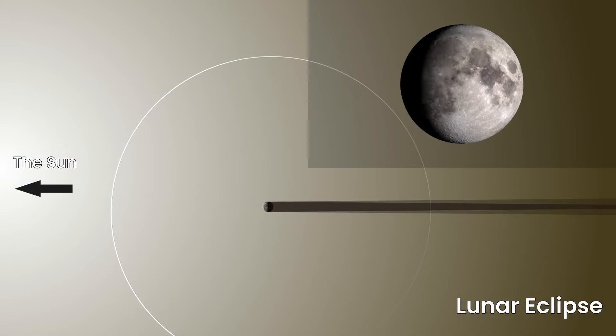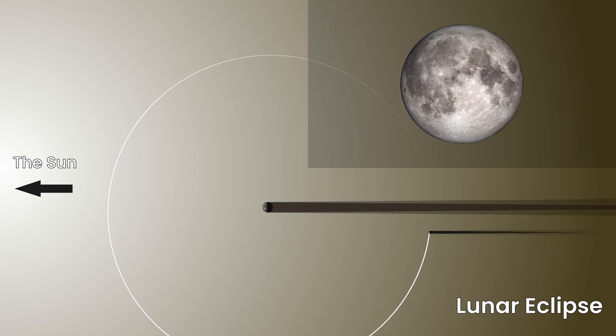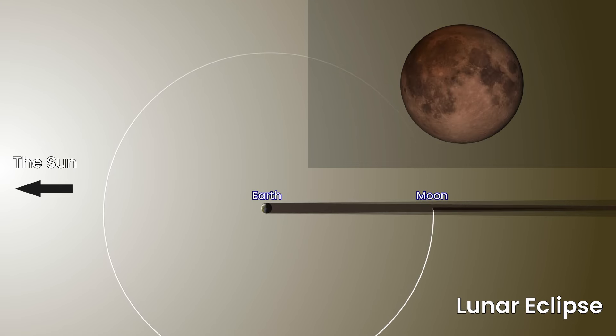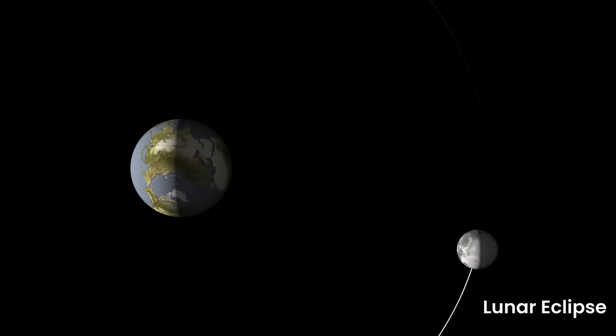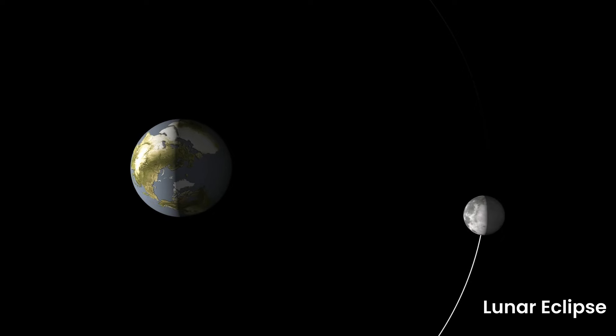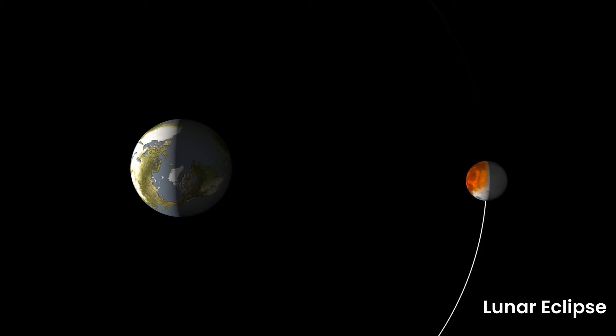Lunar eclipses occur at the Full Moon phase, when the Earth is between the Moon and the Sun. This time, it's the Earth that casts a shadow, which falls on the Moon, covering it either partially or totally. Unlike solar eclipses, during a total lunar eclipse the Moon doesn't become fully dark — instead it will look deep red.